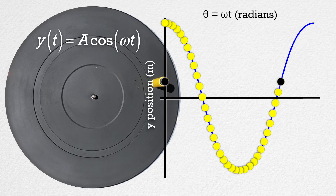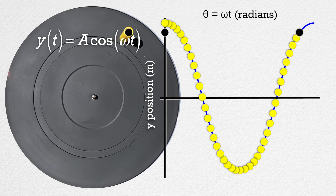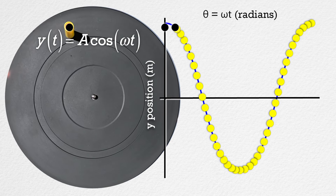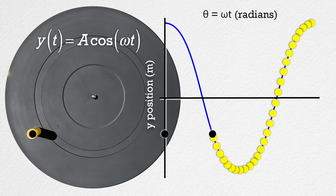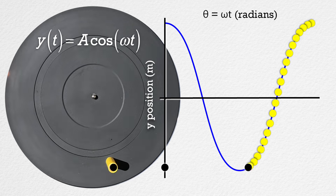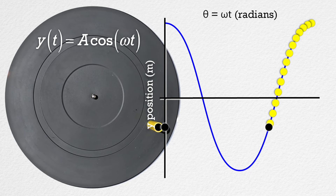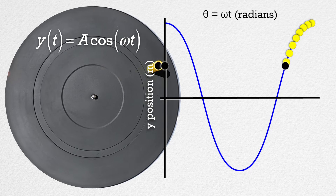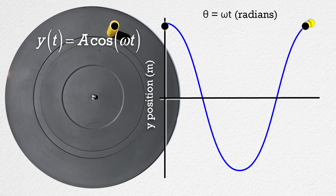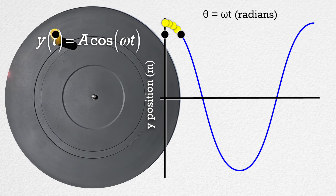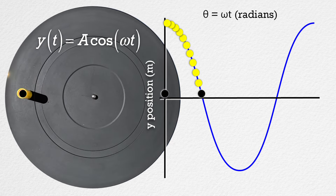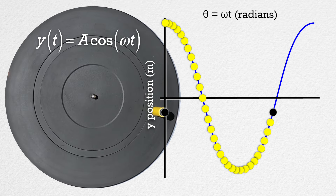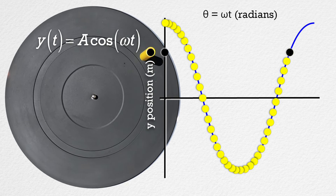Position equals amplitude times cosine of angular frequency times time. Unlike last time where we graphed the x position as a function of time, in this example we are graphing the y position as a function of time. If you are paying careful attention, you will notice we have set the initial time for the y position graph after the turntable is rotated 90 degrees relative to the circular motion for the x position graph. This makes it so we end up having the same position equation as before, because sine and cosine curves are phase shifted from one another by 90 degrees.